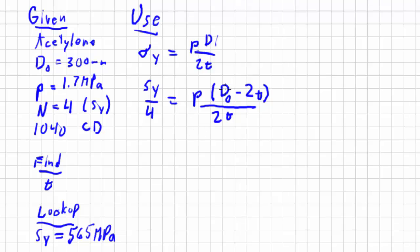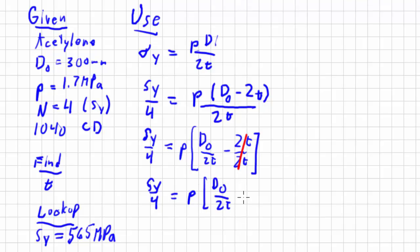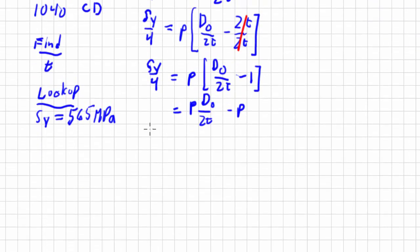So I'm going to separate these out and do some algebra here. So I'm going to get rid of some t's here. So 2t over 2t becomes 1. So Sy over 4 equals pressure times this over 2t minus 1. So I've got p, outside diameter over 2t minus p. Put p on the other side.